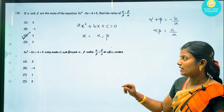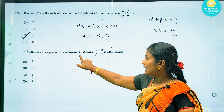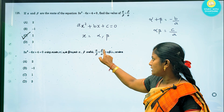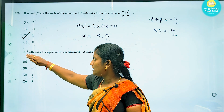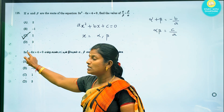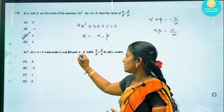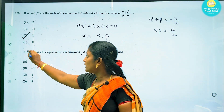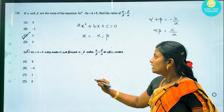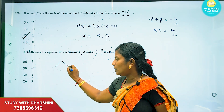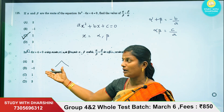Second problem: 3x squared minus 6x plus 4 equals 0, where the roots are alpha and beta. We need to find alpha divided by beta plus beta divided by alpha. If we solve this using the quadratic formula, we would find two x values, but instead we will use a shortcut.